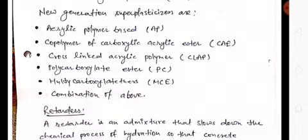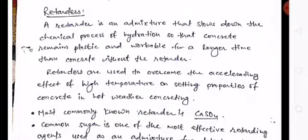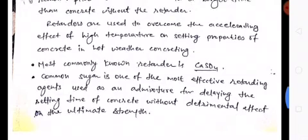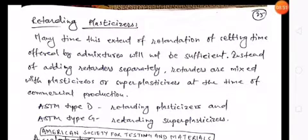Retarders: a retarder is an admixture that slows down the chemical process of hydration so that concrete remains plastic and workable for a longer time than concrete without retarders. Retarders are used to overcome the accelerating effect of high temperature on setting properties of concrete in hot weather concreting. The most commonly known retarder is CaSO4. Common sugar is one of the most effective retarding agents, used for delaying the setting time of concrete without detrimental effect on ultimate strength.